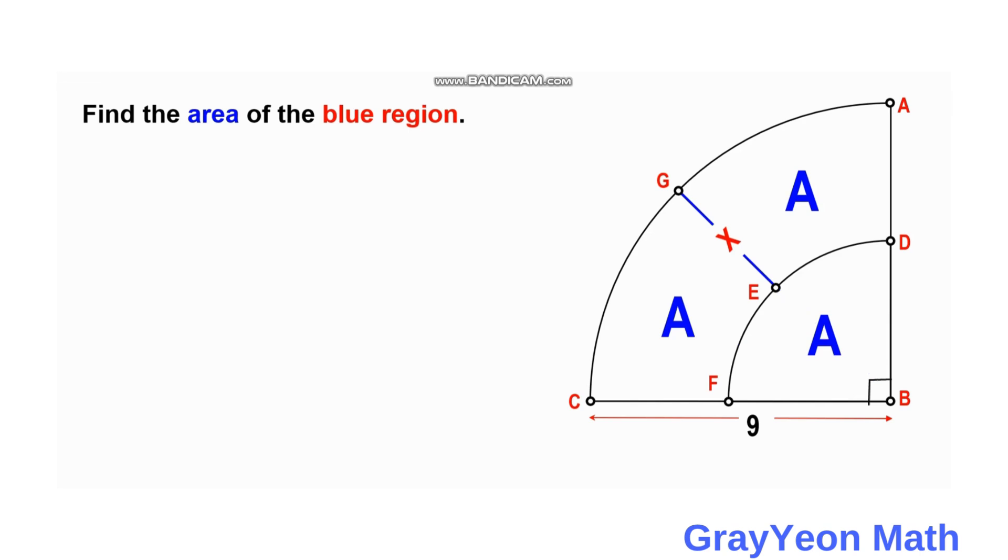So first is we write an equation about the quarter circle, the whole quarter circle. So it is equal to 3A equals pi over 4, since this is a quarter circle. Then you have to square the radius, so that is 9 squared.